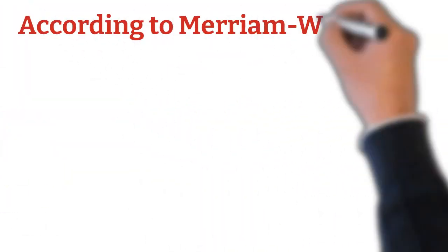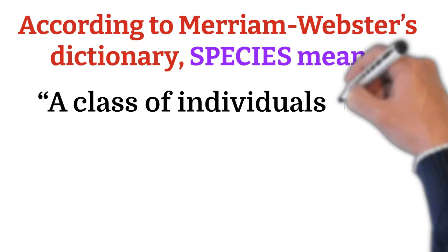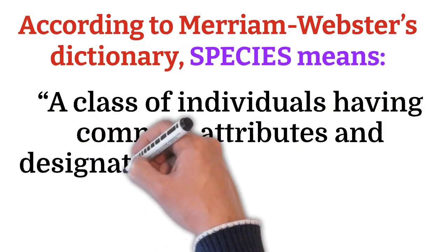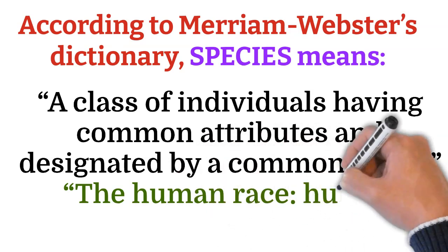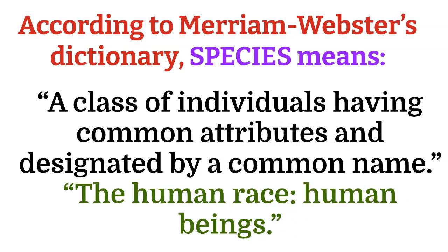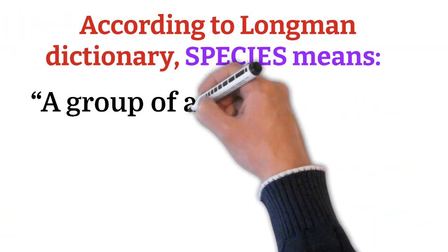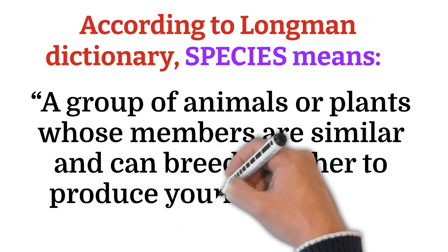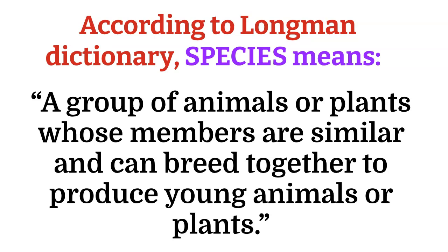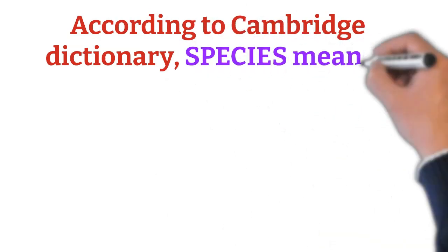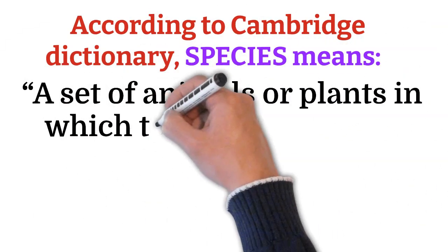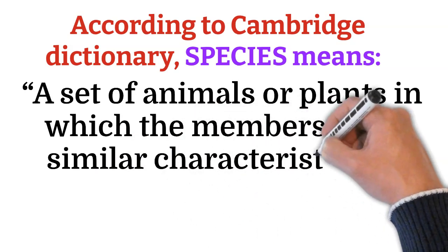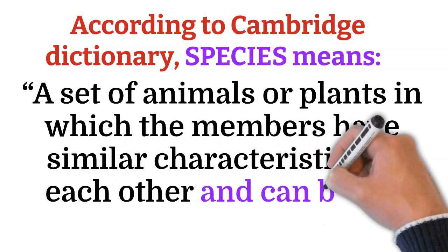According to Merriam-Webster's Dictionary, species is a class of individuals having common attributes and designated by a common name — the human race, that is human beings; or any group of animals. According to Longman Dictionary, a group of animals or plants whose members are similar and can breed together to produce young animals and plants. According to Cambridge Dictionary, a set of animals or plants in which members have similar characteristics and can breed with each other.